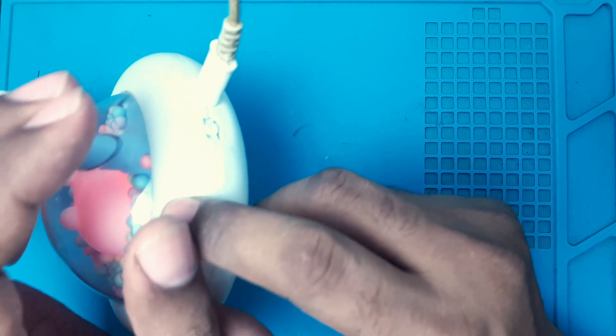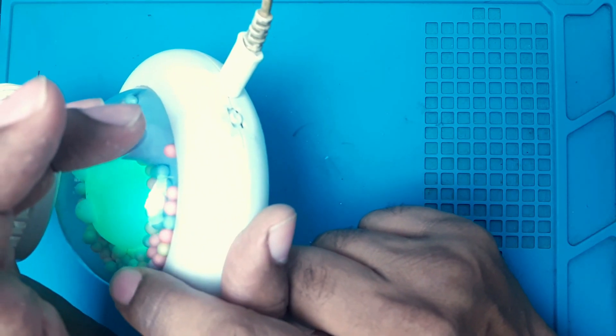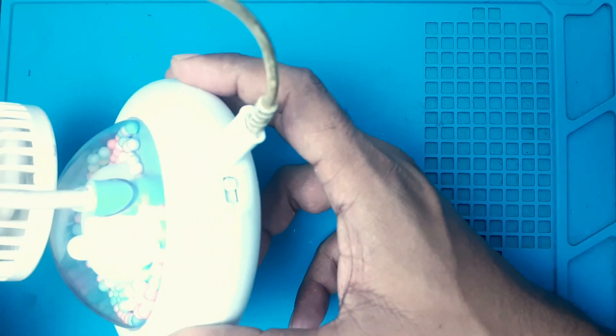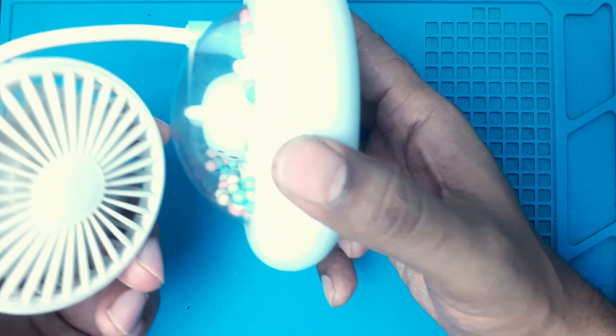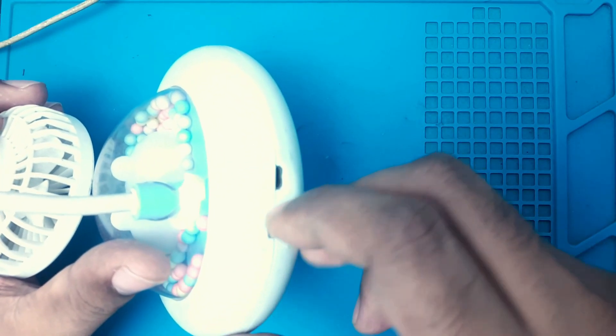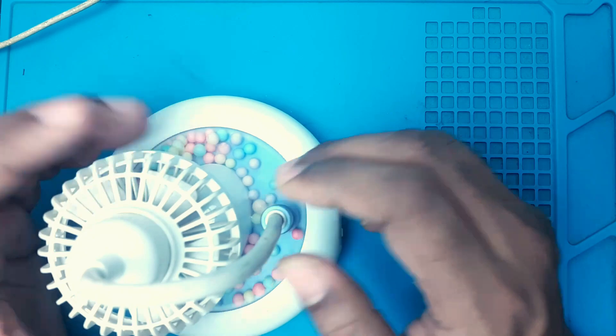Mid position, light turns on and it changes its colors. And third position, the fan is on. But if I unplug the charger, it turns off. That means it cannot hold any charge.